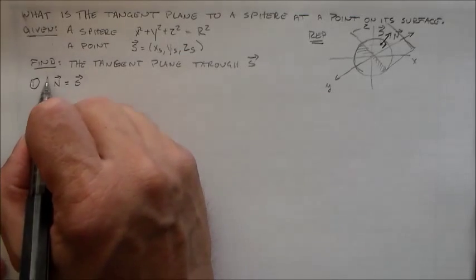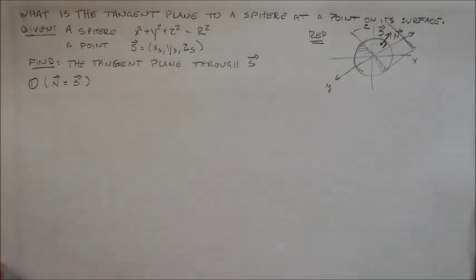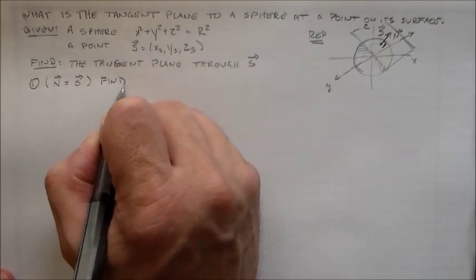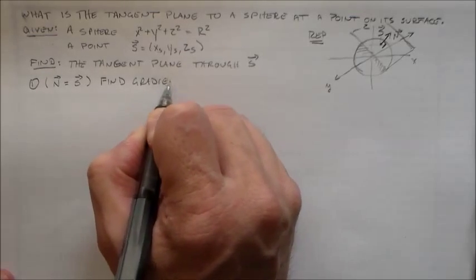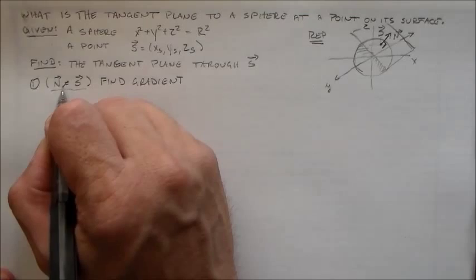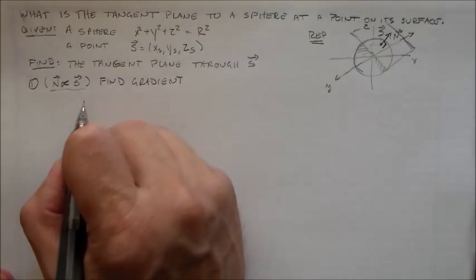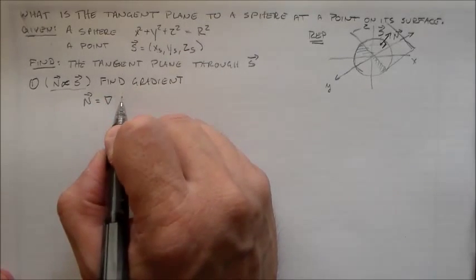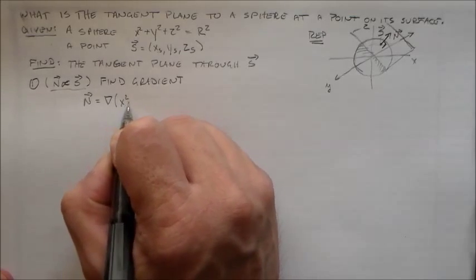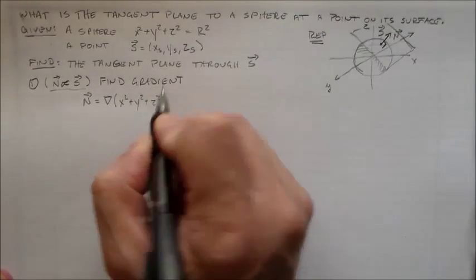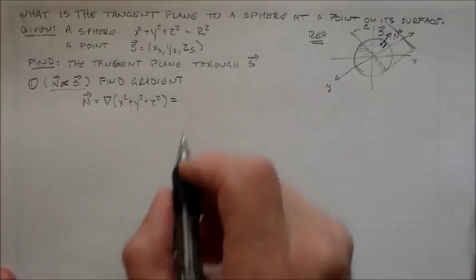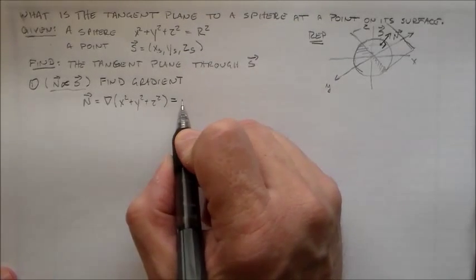Now if you're going to do this on a more complicated surface, then you need to find the gradient. We already know that it's actually going to be proportional to S. We find our normal vector by finding the gradient, and that gradient is of X squared plus Y squared plus Z squared. The R squared doesn't matter because we only need something in that direction — it doesn't need to be normalized.